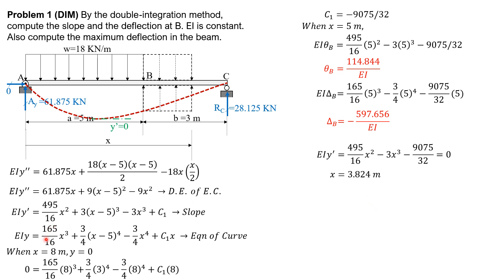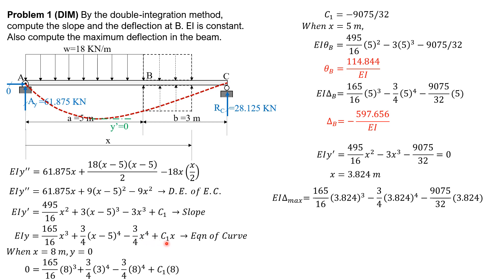Finally, substituting x equals 3.824 into the equation of the curve: EI delta max equals 165/16 times 3.824 cubed — (x minus 5) term is ignored — minus 3/4 times 3.824 to the fourth, minus negative 9075/32 times 3.824. Solving, delta max equals negative 668.175 over EI, whose magnitude is greater than delta B. We confirm this is the answer.